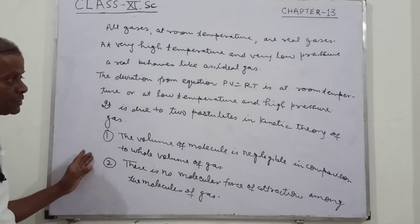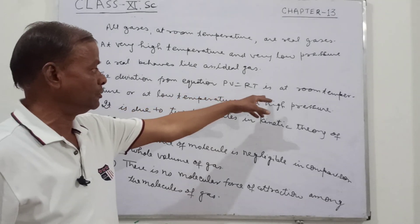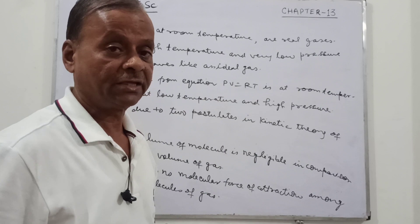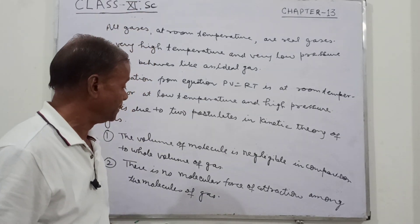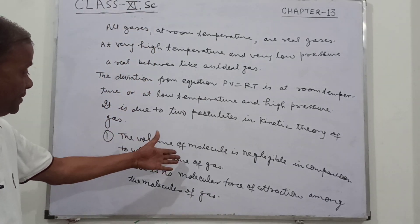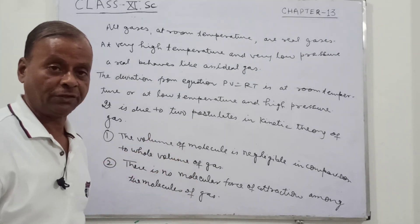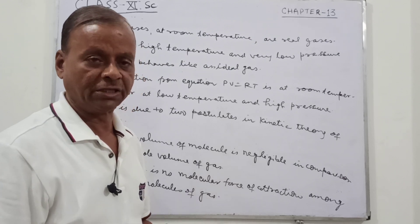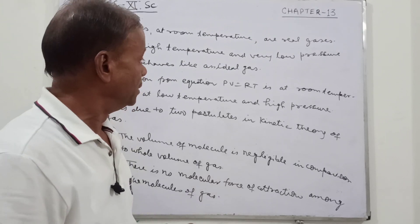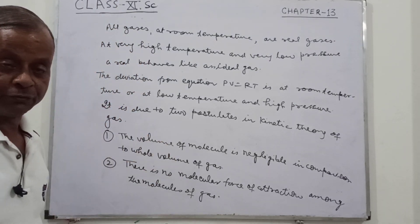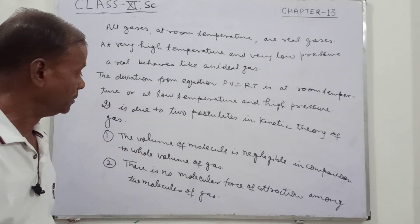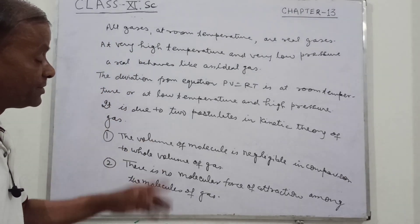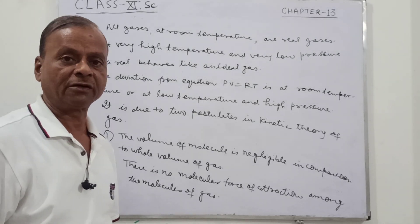These are the two factors because of which the ideal gas equation PV equal to RT is not followed at room temperature, since at room temperature all gases are real gases. If these two factors are corrected, we can get the equation for the real gas, which is called the Van der Waals gas equation.